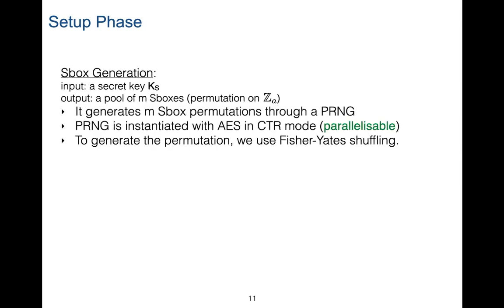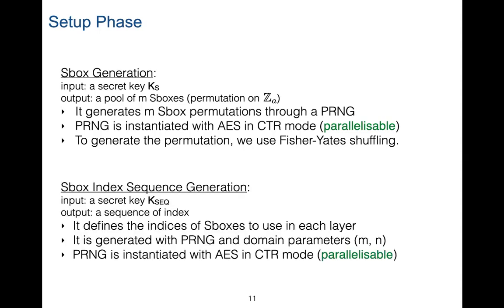In the S-box generation, the input key KS is used in AES as a PRNG, instantiated with AES in counter mode, which is parallelizable. The permutations are generated with Fisher-Yates shuffling, which is essentially rejection sampling. The S-box index sequence generation similarly takes KeySec as input and uses the PRNG along with domain parameters. These two PRNGs for S-box generation and index sequence generation could be completely different, but we chose AES in counter mode for its parallelizable features.